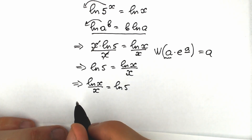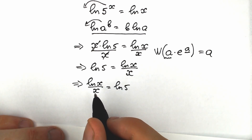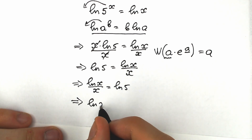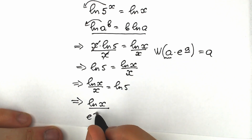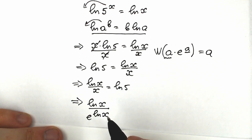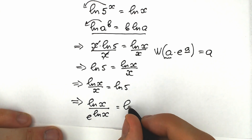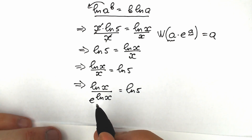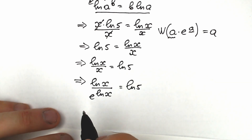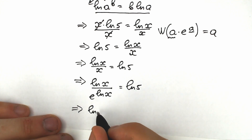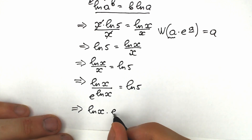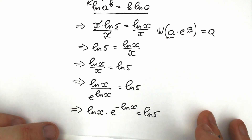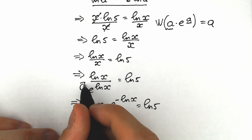First of all, instead of x, let's write e to the power of natural log x — this changes nothing, but it helps us a lot. So we have natural log x all over e to the power of natural log x, equal to natural log 5. Now let's bring e to the power of natural log x from the denominator to the numerator with a minus sign. As a result, we have: natural log x times e to the power of minus natural log x, equal to natural log 5.